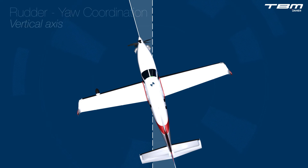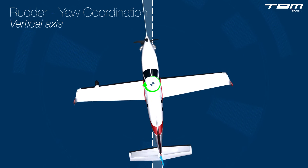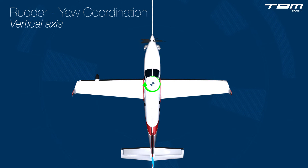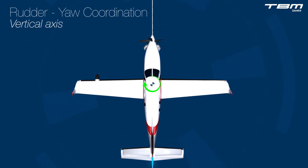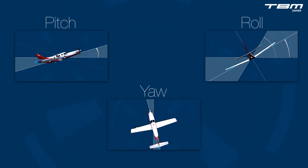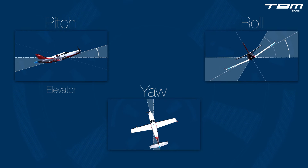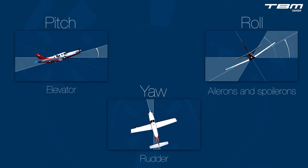Yaw coordination about the vertical axis is maintained with the rudder. Adjusting the airplane's orientation with the wrong primary flight control leads to uncoordinated flight. The primary flight control for pitch is the elevator. The primary flight controls for TBM roll control are the ailerons and interconnected spoilerons. The most neglected primary flight control is the rudder, which either maintains or returns the aircraft to coordinated flight.